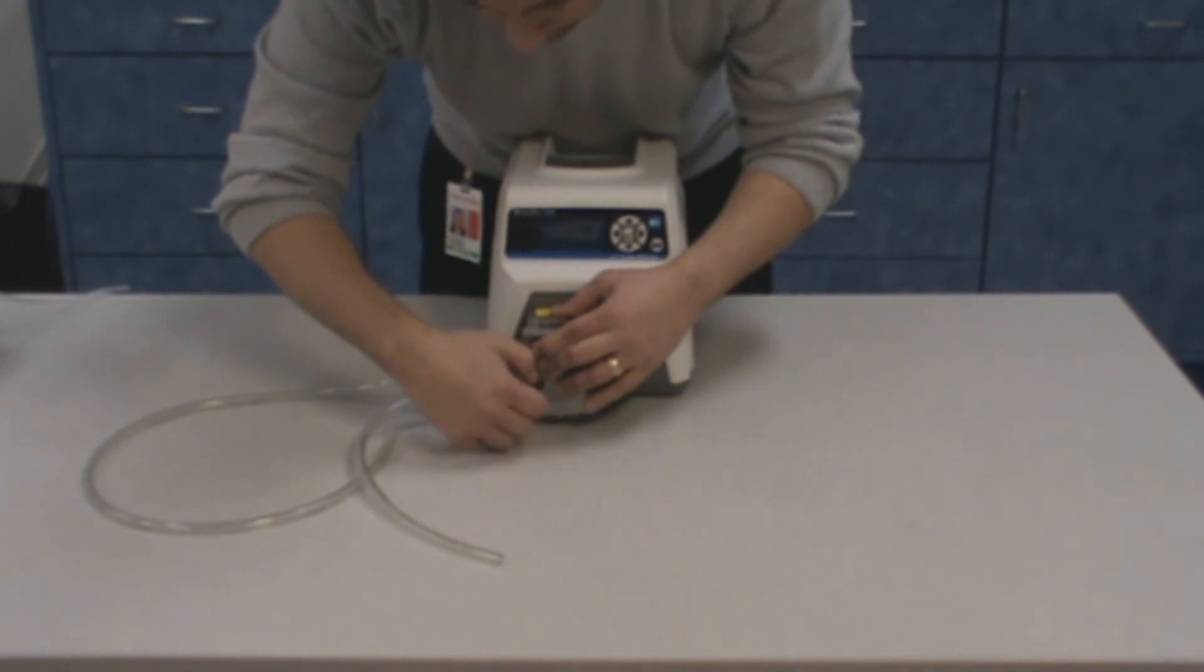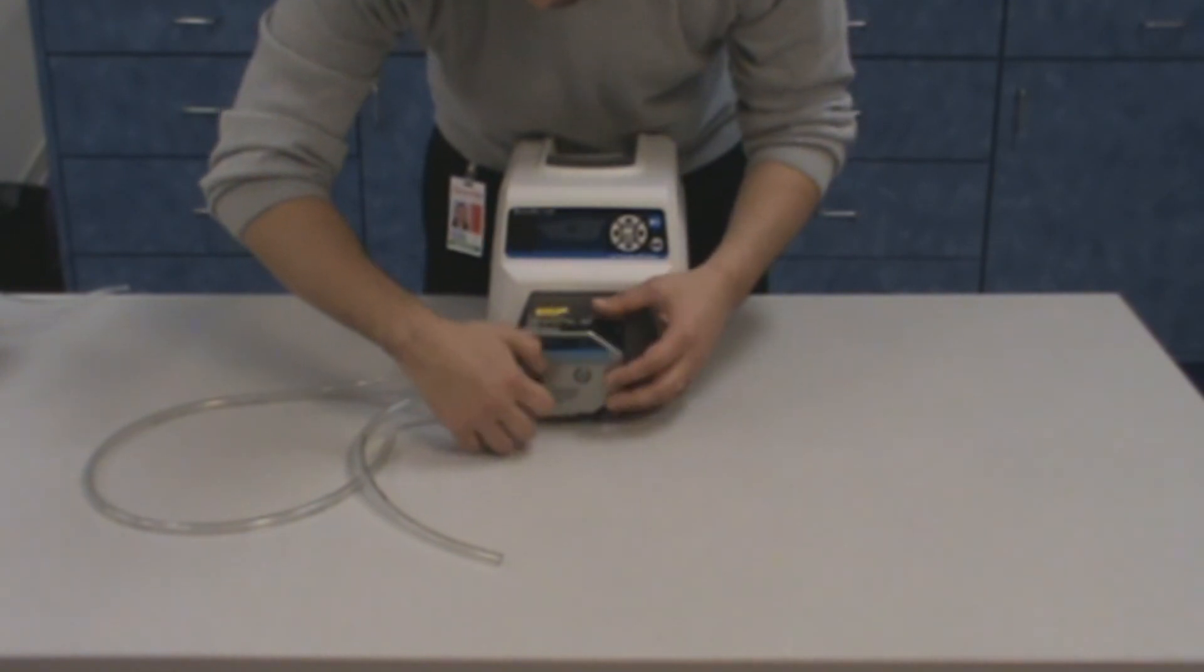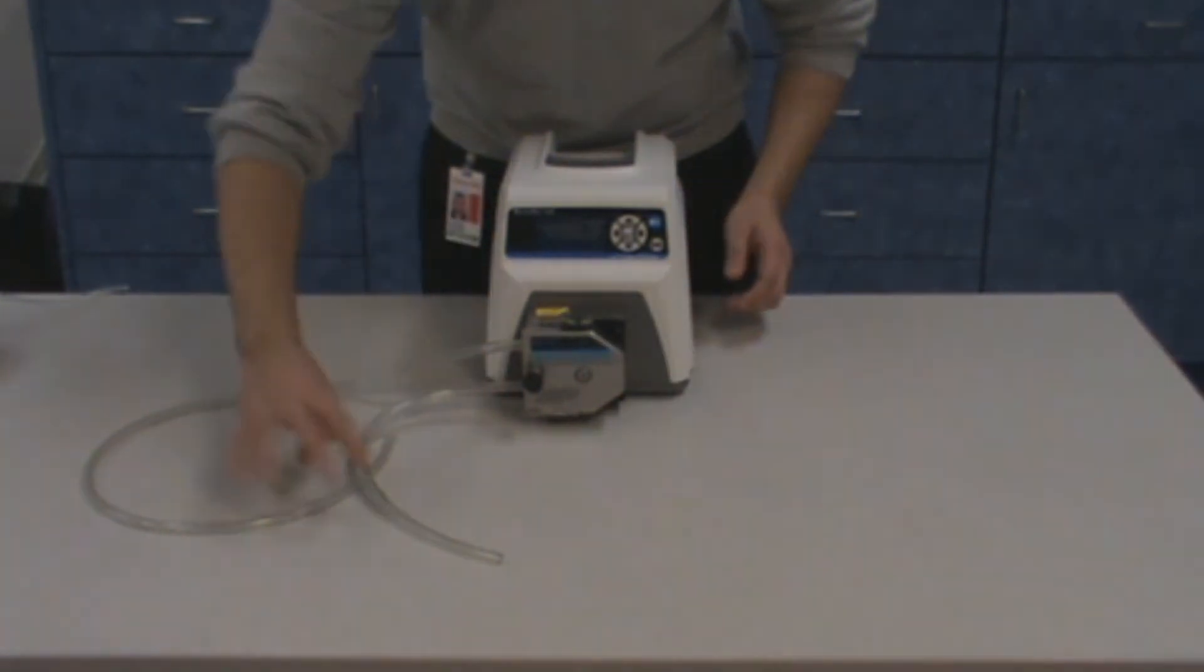Next, tighten the tubing retainer by rotating the tubing retainer knob clockwise to prevent the tube from moving. Now you can turn on the drive and your pump is ready for use.